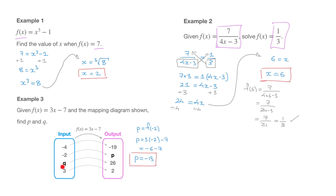Now q is an input value for our function — it's the input value which leads to the output 26. This means that if we replace every x inside f of x by q, the output has to be 26. In other words, f of q has to equal 26. Going back to the expression for f of x and replacing every x by q leads us to 3 times q minus 7 equals 26.